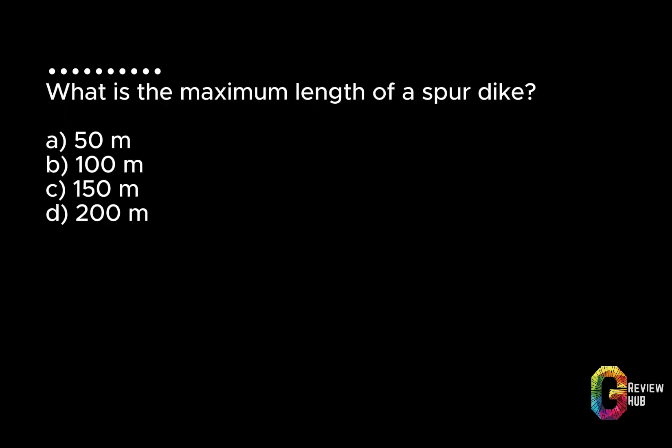What is the maximum length of a spur dike? A. 50 m. B. 100 m. C. 150 m. D. 200 m. Answer: B. 100 m.